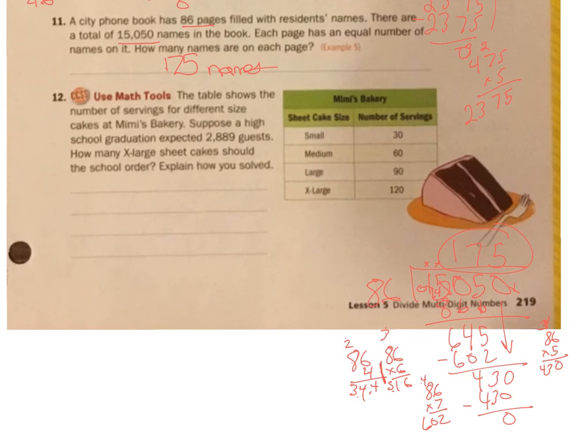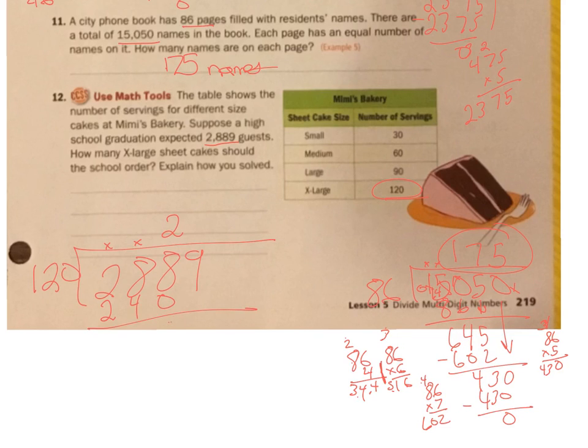Last one. Number 12. Use the table. The table shows the number of servings for different sized cakes. Suppose a high school graduation expected 2,889 guests. How many extra large sheet cakes should the school order? Extra large. So, it serves 120. So, I'm going to take 2,889 divided by 120 servings. This will tell me how many extra large cakes. So, 120 goes into 2, nothing, goes into 28, but goes into here 2 times. 2 times 120 is 240. So, that's 8, 4.